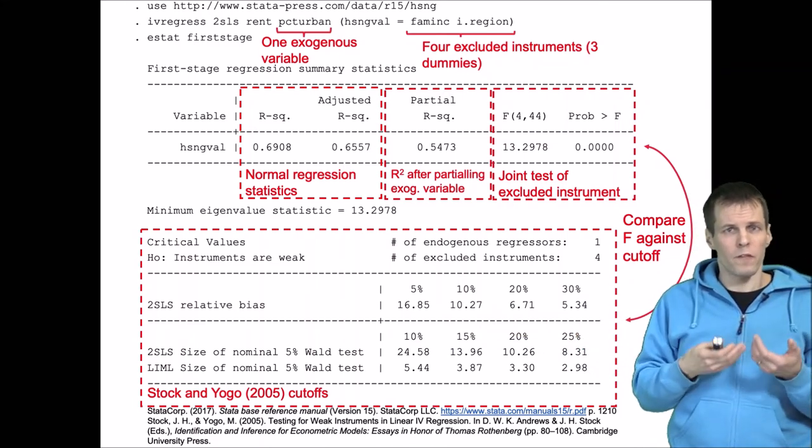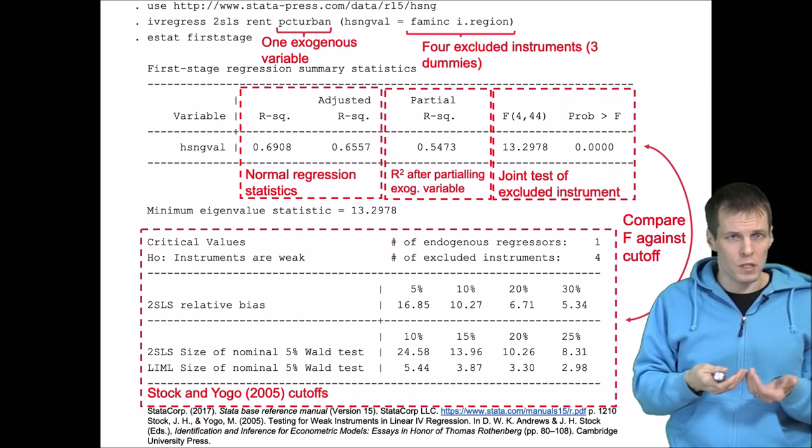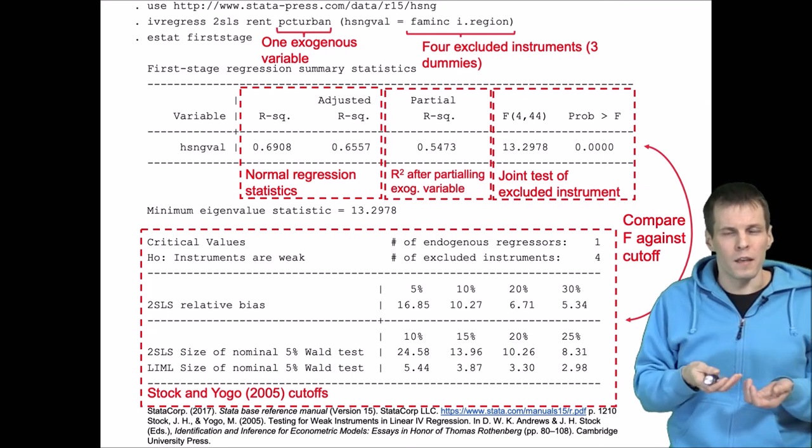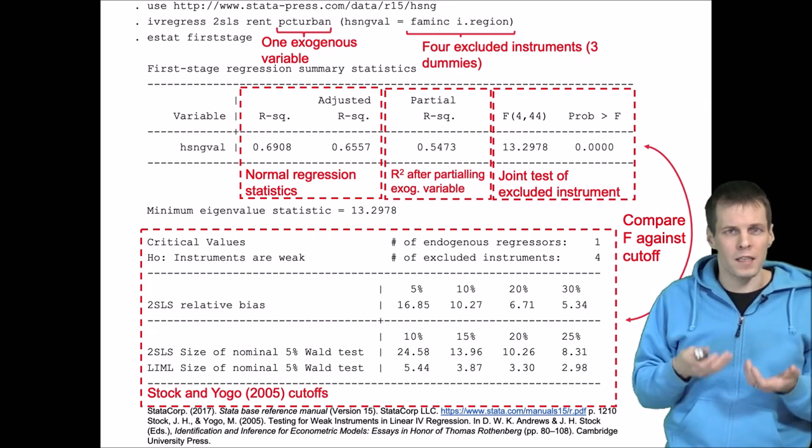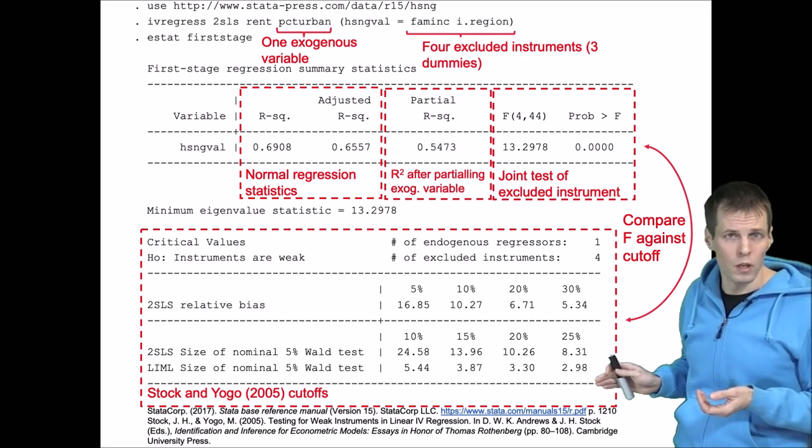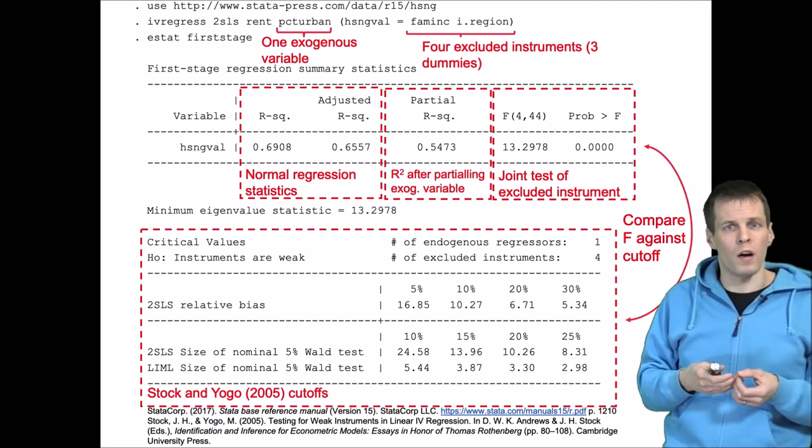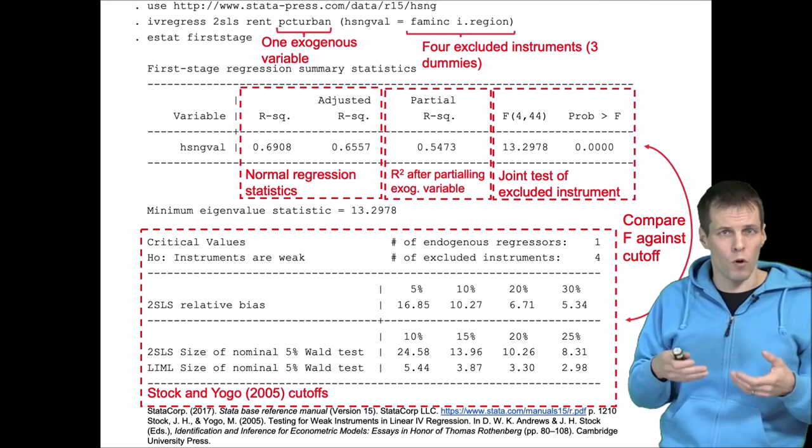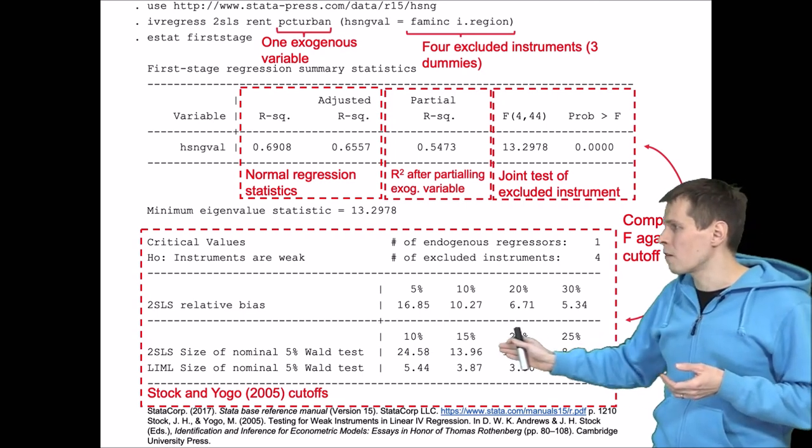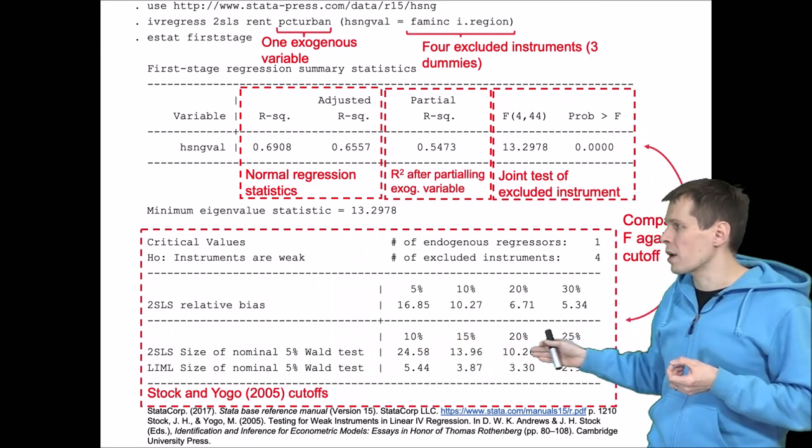So normally the false positive rate is five percent when a test is valid, but if instruments are weak, then these tests with two-stage least squares and limited information maximum likelihood will tend to reject the null hypothesis more often than they should. And then we take a look at what kind of a false positive rate we are happy with.